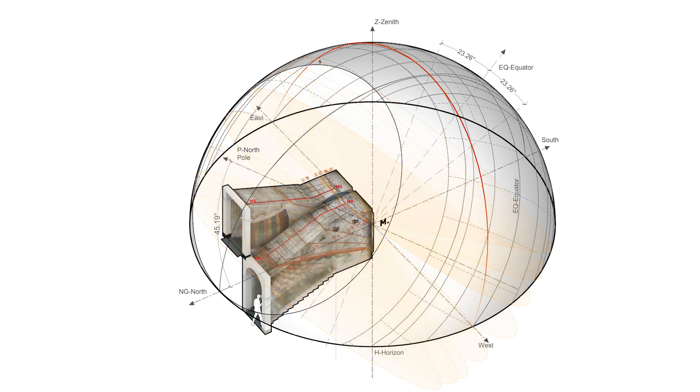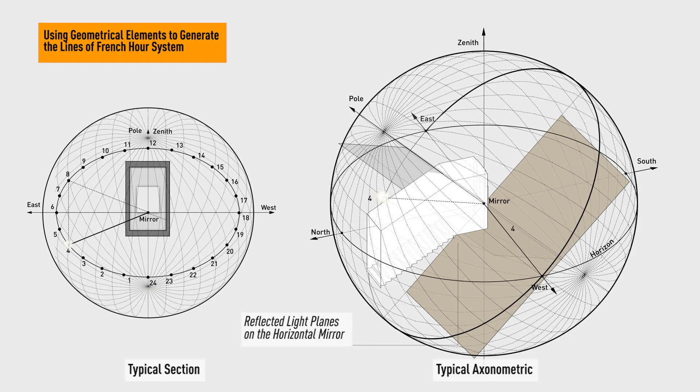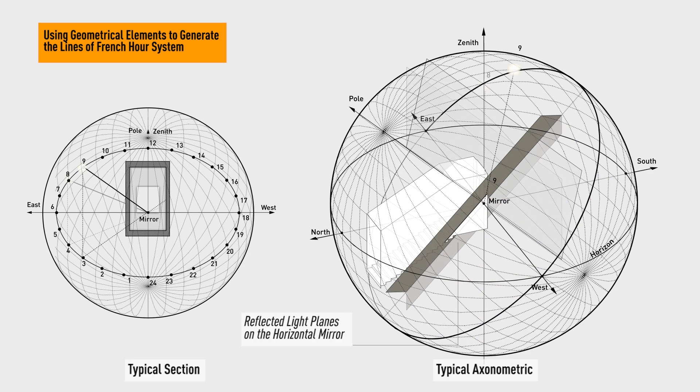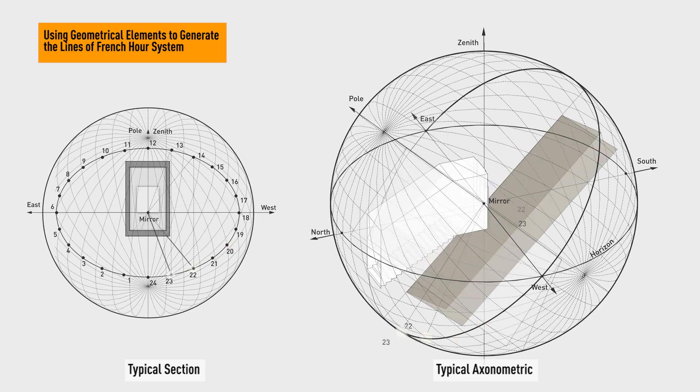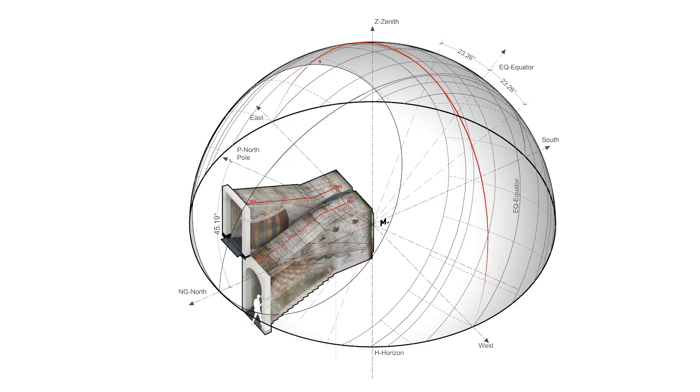French hour lines are formed through the intersection of the celestial sphere and planes of light. These light planes are then rotated around the north pole in multiples of 15 degrees, starting from the meridian plane that represents 12 o'clock.